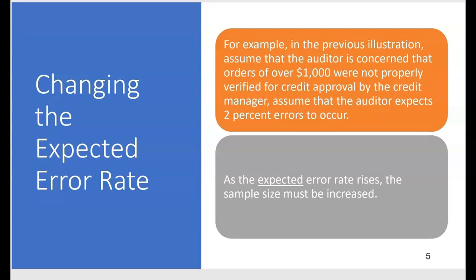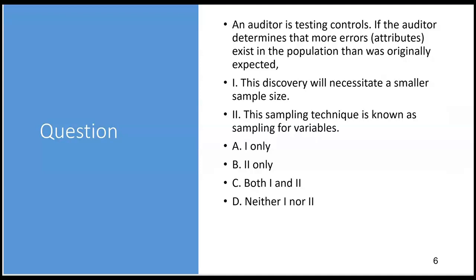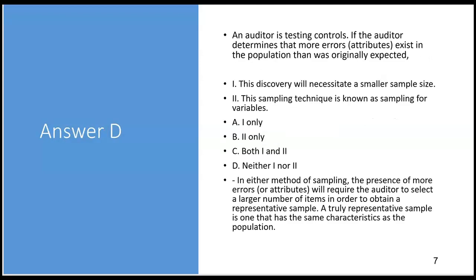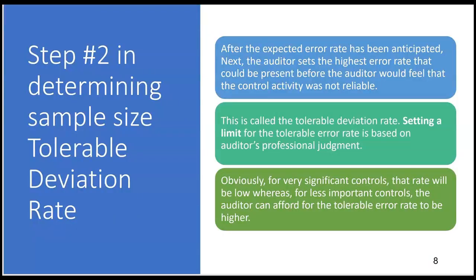Practice question: An auditor is testing controls. If the auditor determines that more errors exist in the population than was originally expected, does this necessitate a smaller sample size? No — this discovery means you're going to need a bigger sample size, because the auditor is expecting more errors. Is the sampling technique known as sampling for variables? No — since the auditor is testing controls, we're sampling for attributes. The answer is D: neither of those choices is correct.